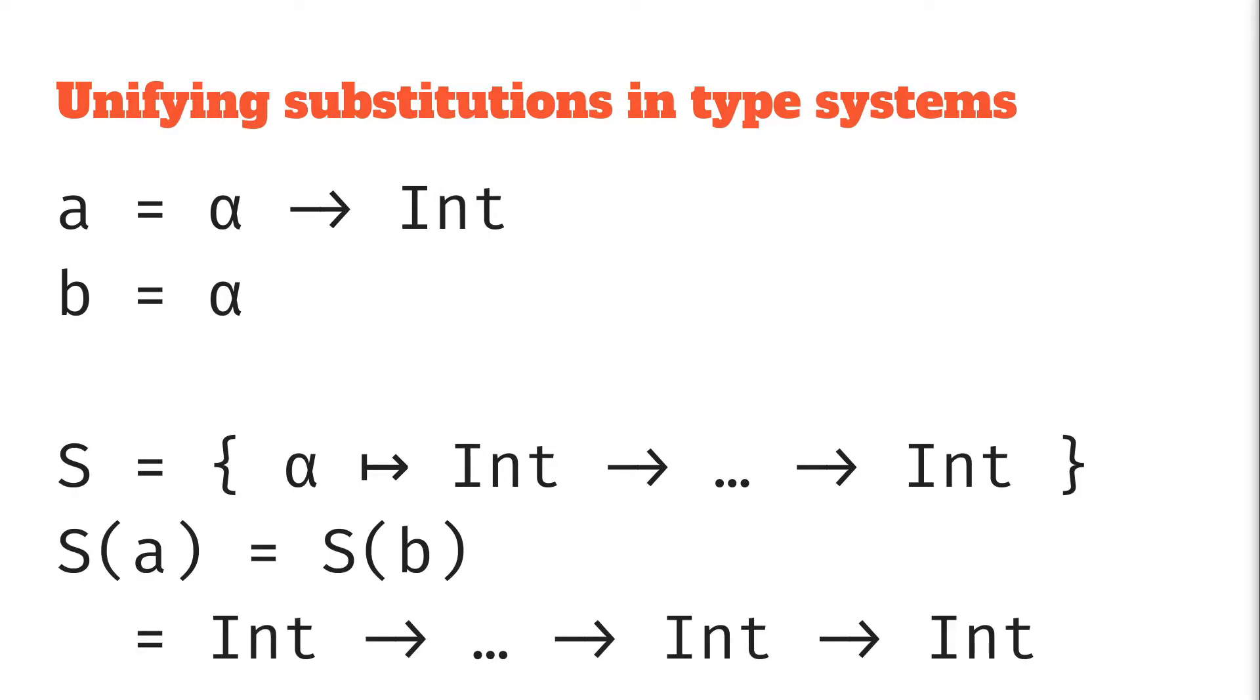So let's have a look at another example. In this case we've got a is α → Int and b is just α, and we want to unify these two. You might already predict where this is going to go, but let's have a look at what we can do here. So this is our infinity problem, and when we apply the substitution to both types we do in fact get a consistent type.